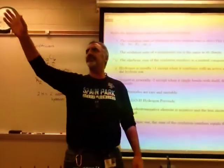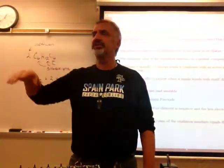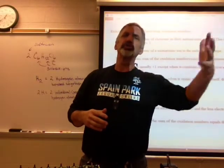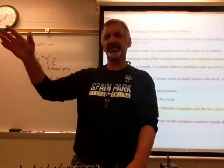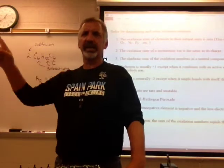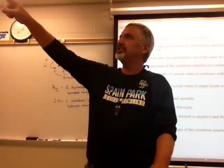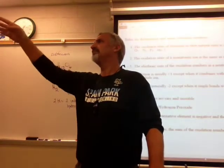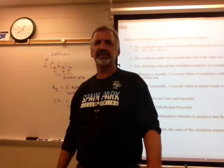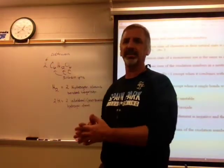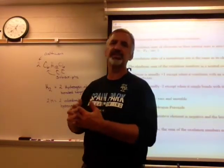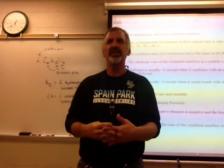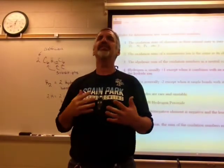When you look at the periodic table and see the alkaline metals, it's going to form a charge of plus one — it loses one electron to have the same electron configuration as the noble gases. The halogens — fluorine, chlorine, bromine — want to gain one electron, so they're going to be minus one. The oxygen family wants to be minus two.